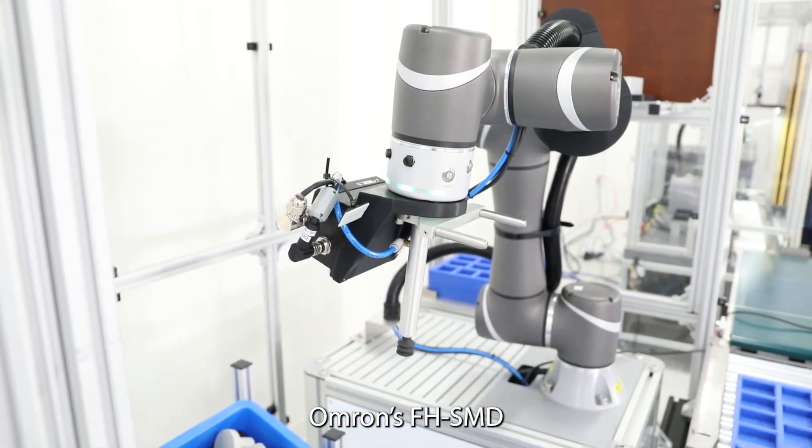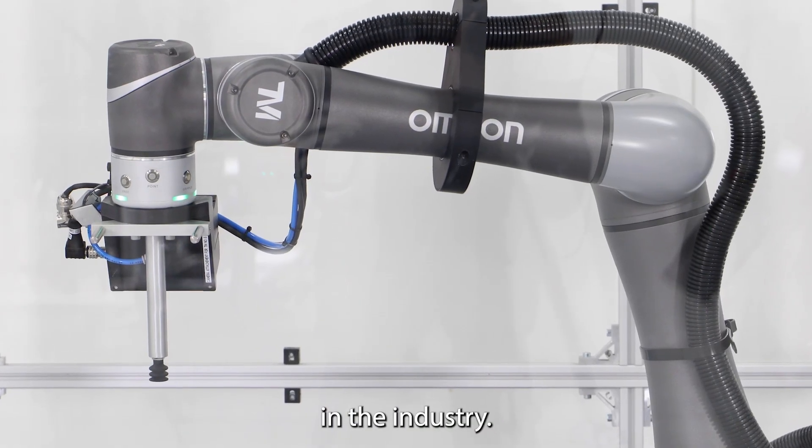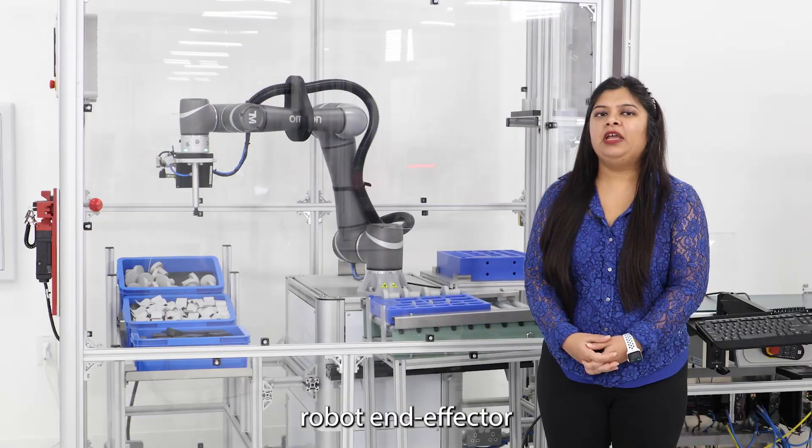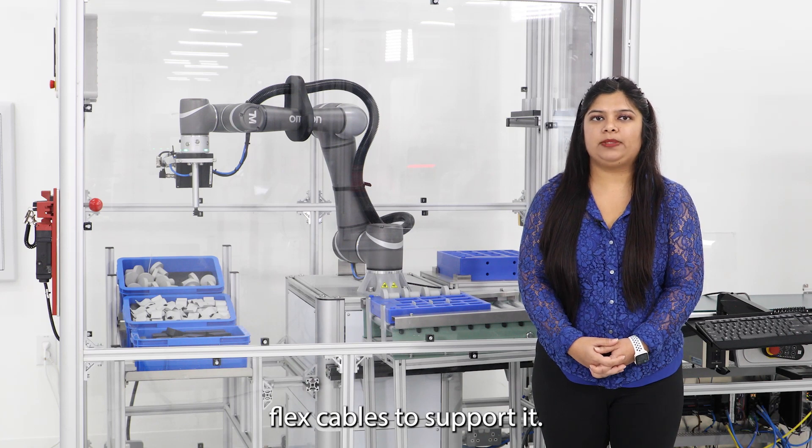Omron's AFH SMD series 3D camera has one of the smallest footprints in the industry. It is easy to mount on a robot's end effector and only requires a couple of robotic, high-flex cables to support it.